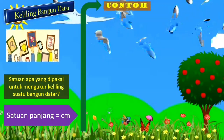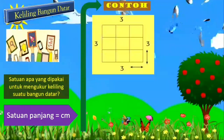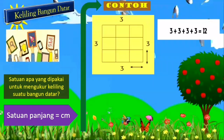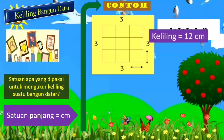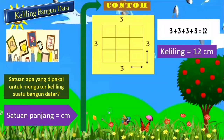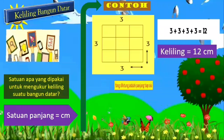Coba kita perhatikan contohnya. Gambar tersebut berapa kelilingnya ya? Ingat bagaimana cara menghitung keliling kemarin? Keliling adalah jumlah panjang sisinya. Sisi bawah 3, sisi kiri 3, atas 3, kanan 3. Maka dijumlahkan adalah 12. Kelilingnya adalah 12 sentimeter. Masih ingat ya — yang dihitung adalah panjang tiap sisinya. Sudah paham? Biar lebih paham, mari kita berlatih soal.